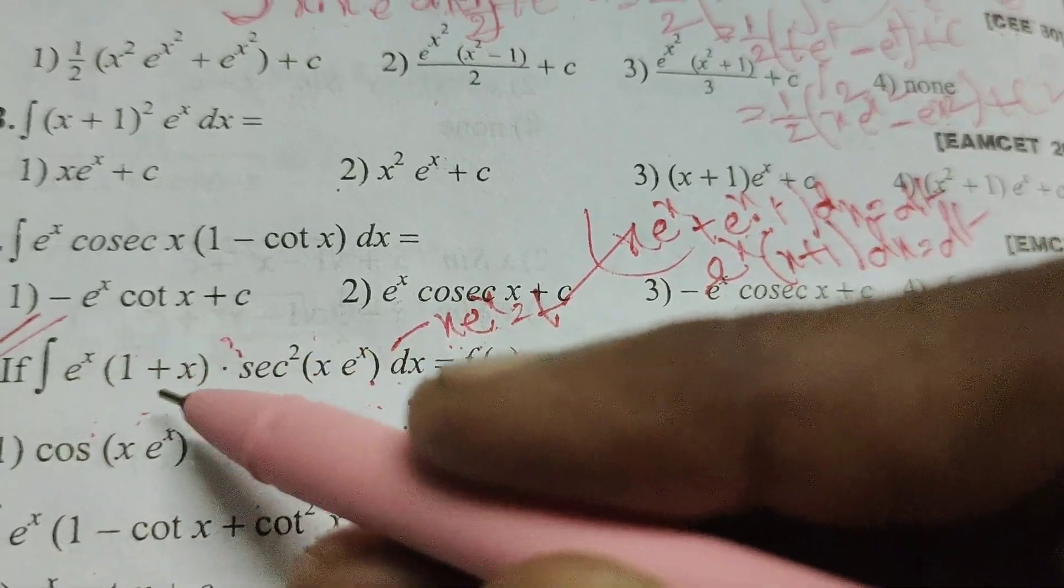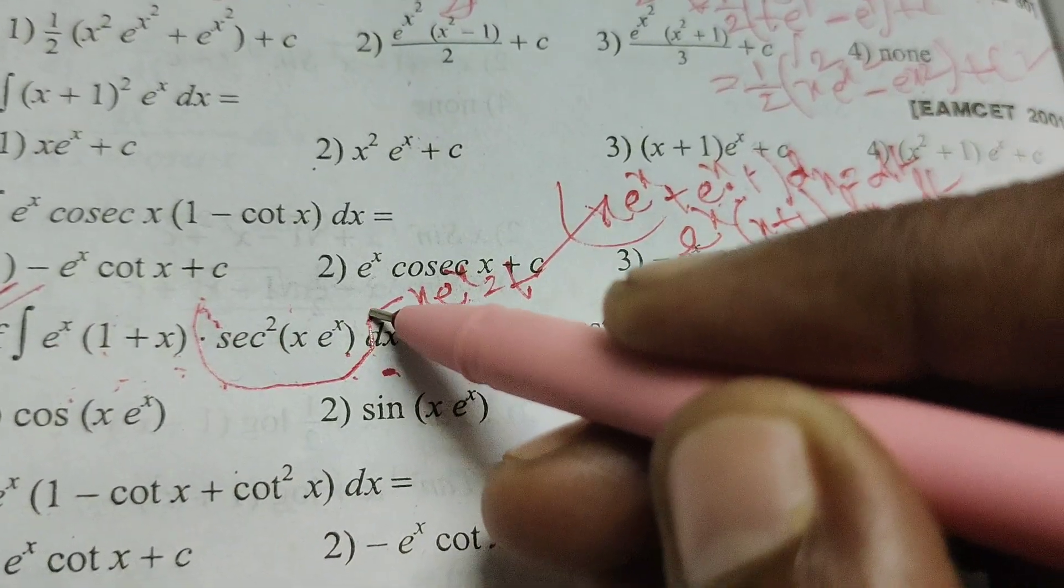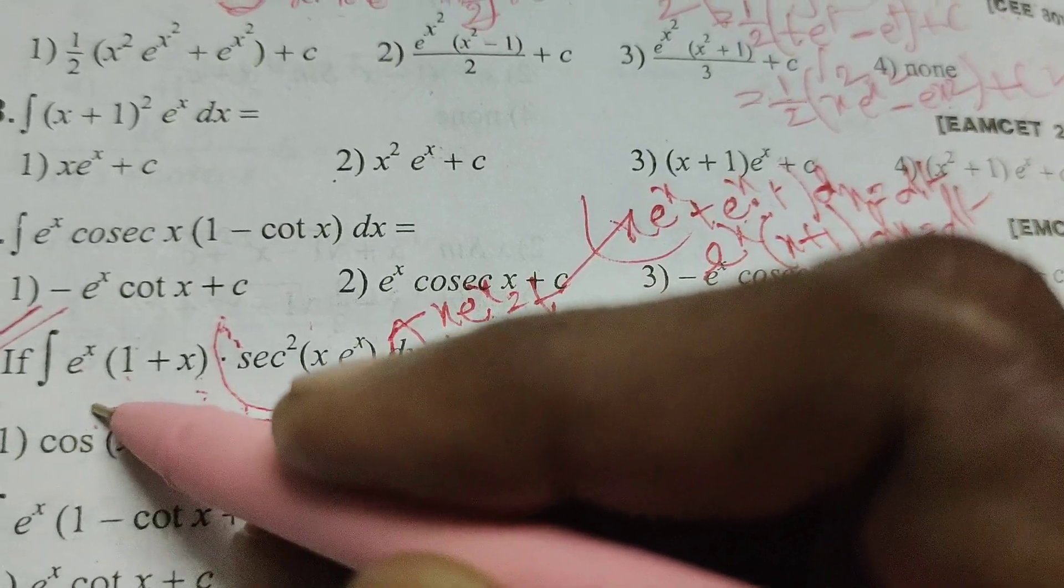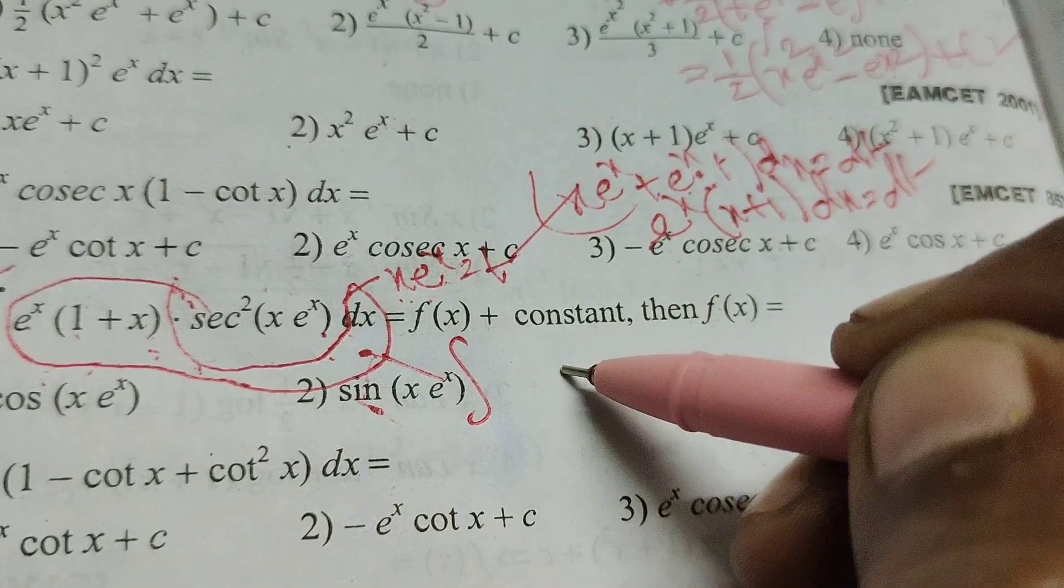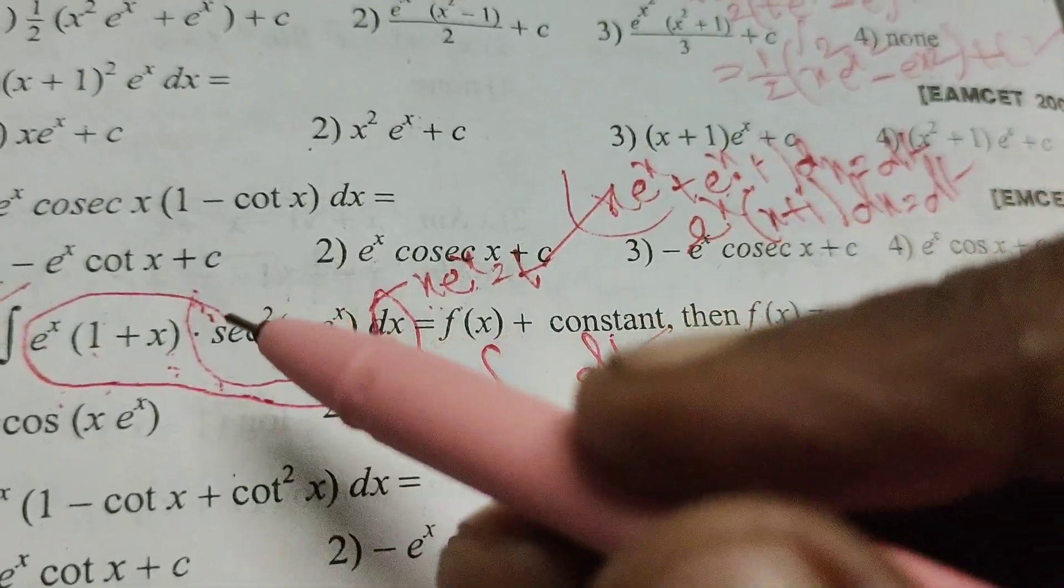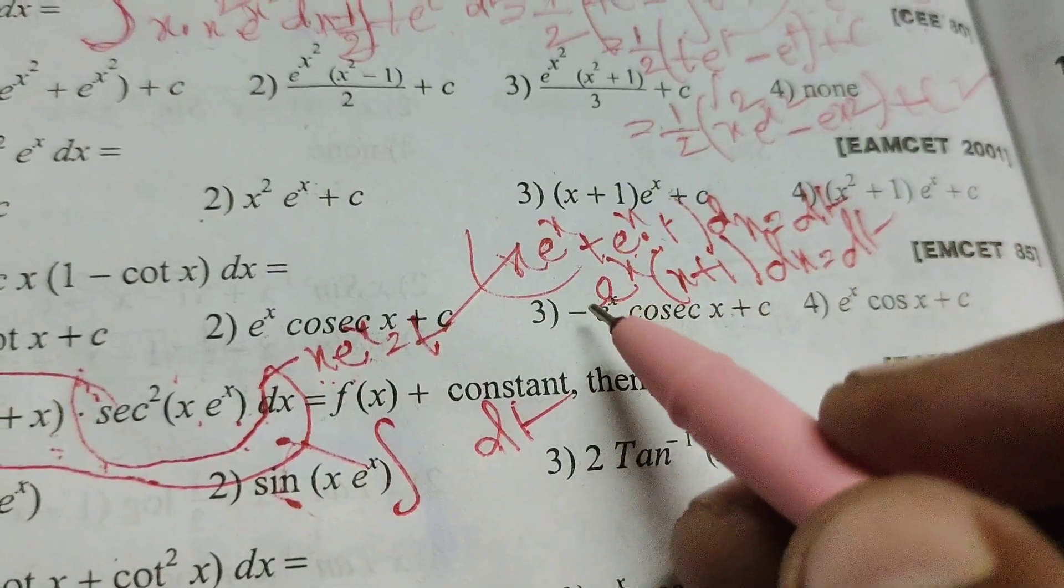Here e^x into (1 plus x), or (x plus 1), substitute dt. Integral of dt is t times secant squared xe^x, which means t.